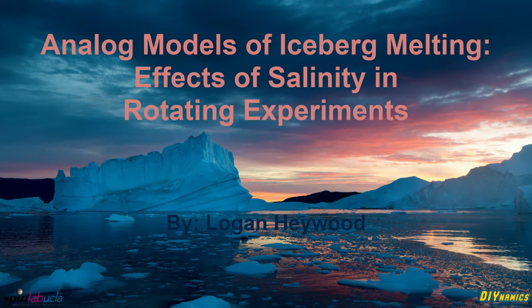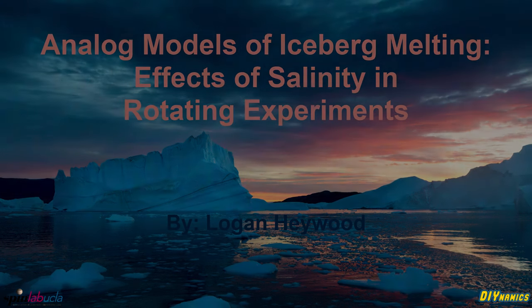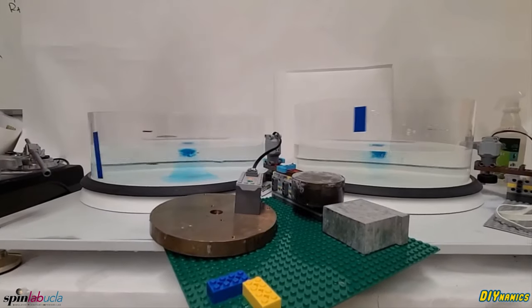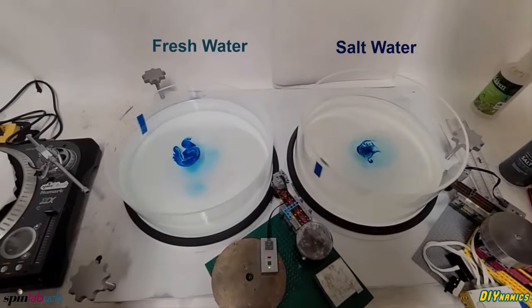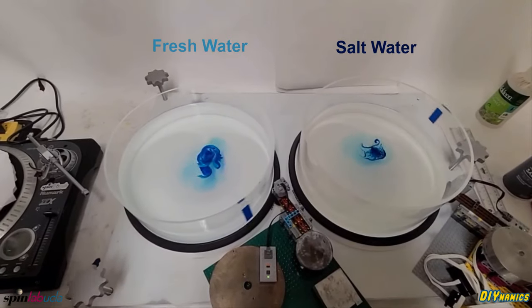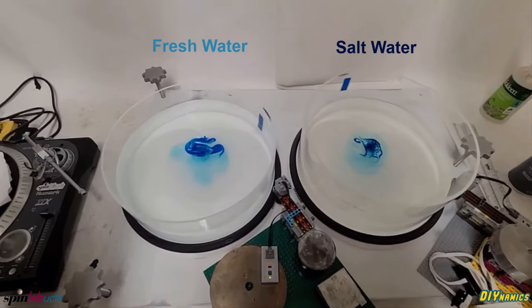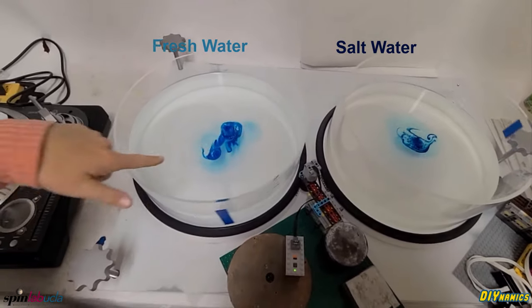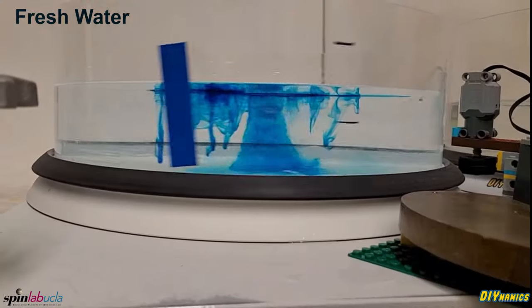As global warming increases its impact on polar ice caps, it's important now more than ever to understand iceberg melt dynamics. We have modeled these dynamics using two rotating DIY dynamics tanks of different salinity water with an ice cube in each to mimic an iceberg. The rotating tanks mimic the effects of planetary motion on ice-ocean dynamics.